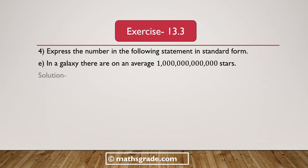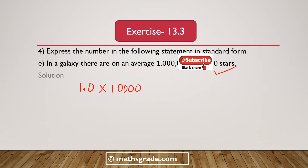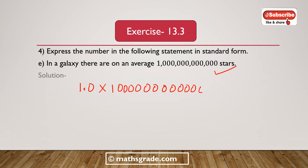Now we solve part E. In a galaxy, there are on an average 1,000,000,000,000 stars. The standard form of this number — if we place the decimal point after 1, it will be 1.0 multiplied with 10 to the power 12. There are 12 zeros. So in a galaxy, there are on an average 1.0 × 10¹² stars. This number is in standard form.